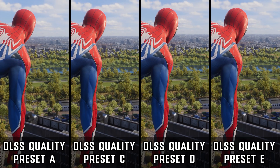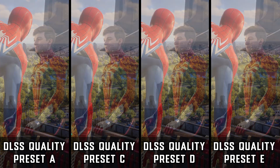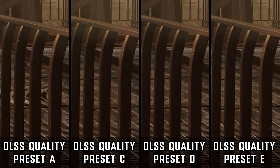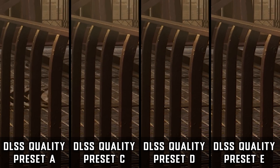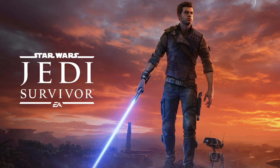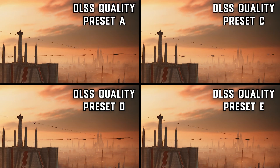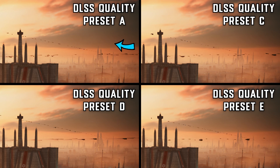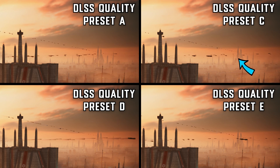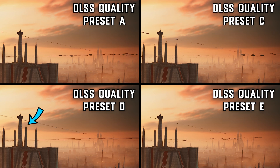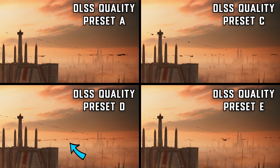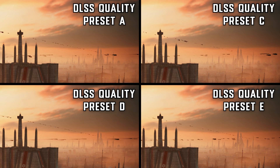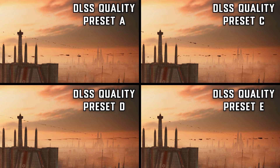Quality-wise in Spider-Man 2 I couldn't find any difference except in one scene where Preset A was struggling, so I had to download the 100 GB game Star Wars Jedi Survivor. In that game I found real differences: Preset A showed ghosting and some shimmering. Preset C solved the ghosting but was shimmering a lot. Preset D solved the shimmering but ghosted heavily. Preset E solved both issues, which is why it's the default preset, although it doesn't completely eliminate ghosting.